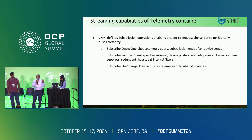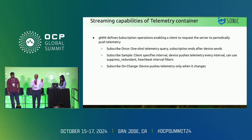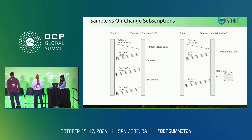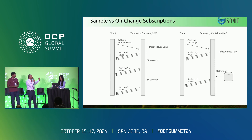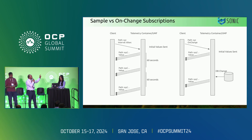We also wanted to stream out any state change information. On-change subscription was very helpful, wherein it streams only when there is a change in the data. In case of the sample subscription, the values are sent back immediately and marked as in sync with the controller. Once in sync, every 60 seconds we can send the data back. But if suppress redundant is set to true, then only if there is a change in that initial value will data be sent after 60 seconds, otherwise nothing will be sent. That way the controller gets updates only when data changes, even with sample subscription.